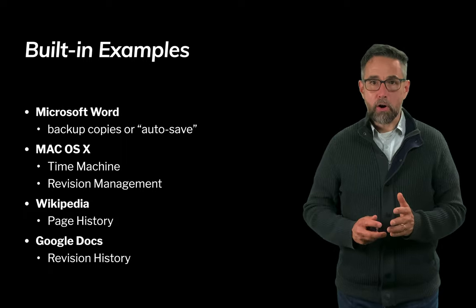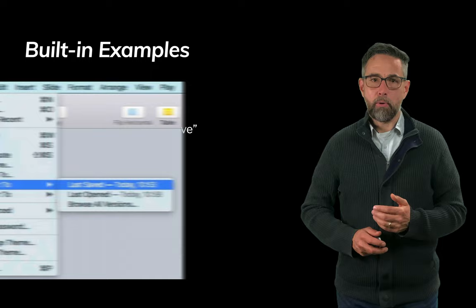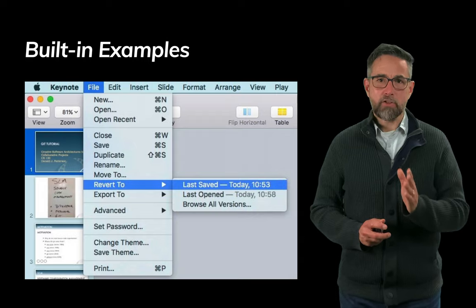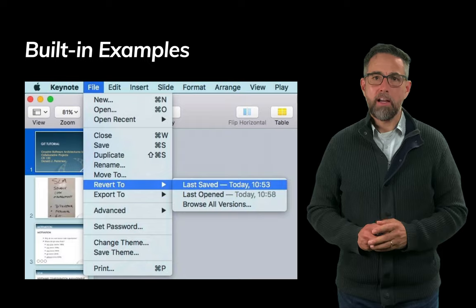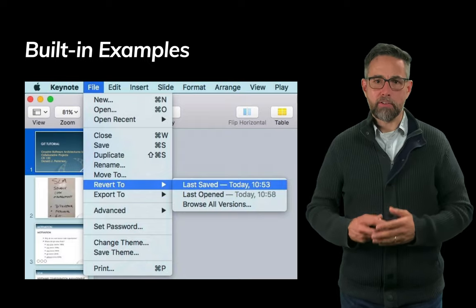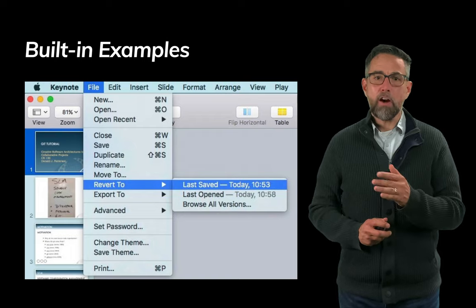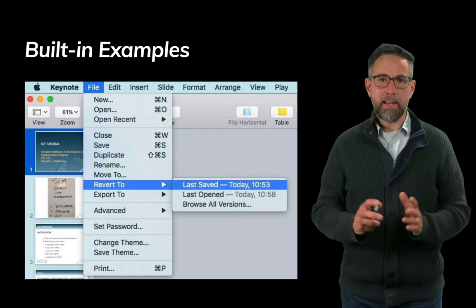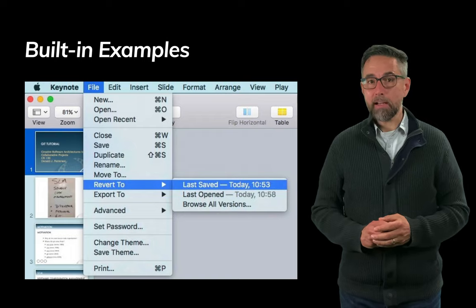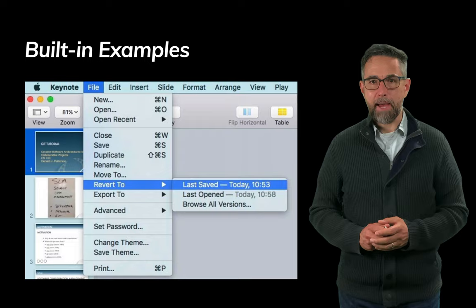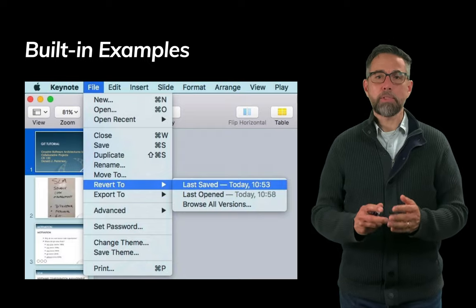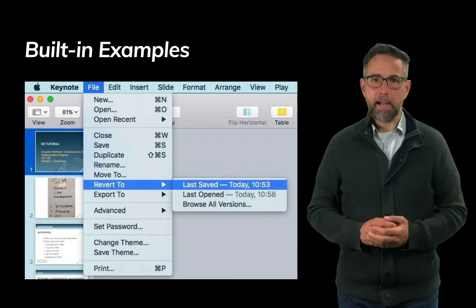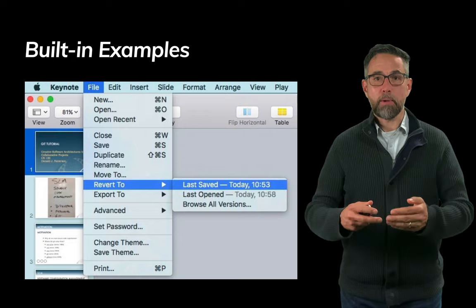Looking at a particular Mac program like Keynote, the menu system provides access to Time Machine information just for the file you're currently working on. You can replace the current version with the last saved version, go back to the last version you opened, or browse all versions in the Time Machine interface — seeing all different versions of that file going back in time. This is change management for a single file.